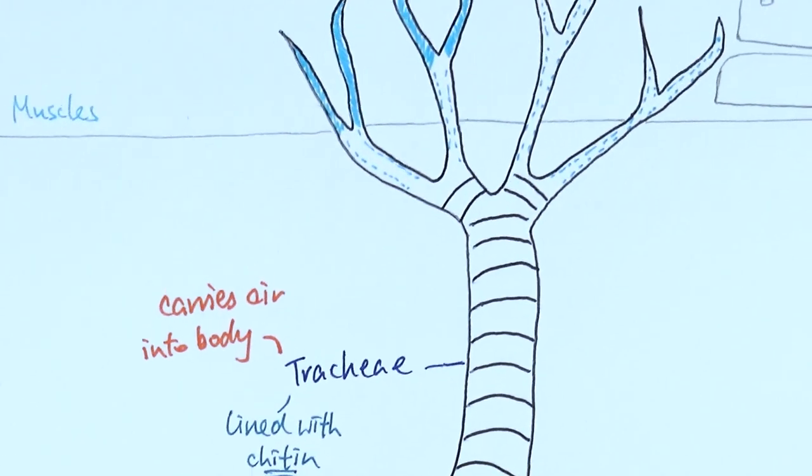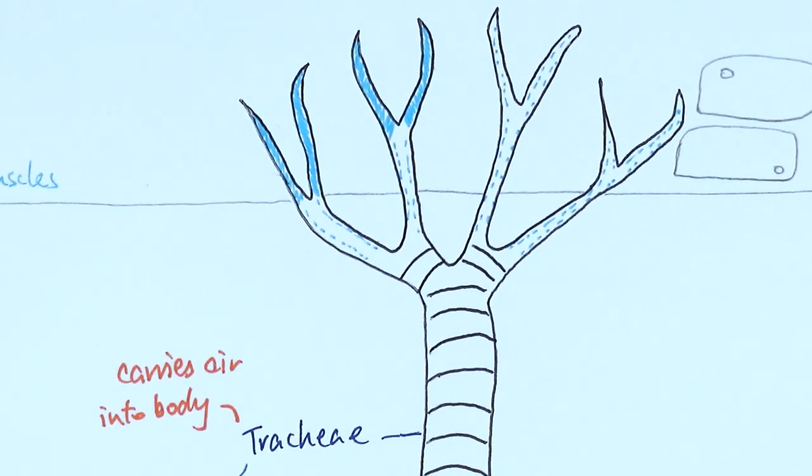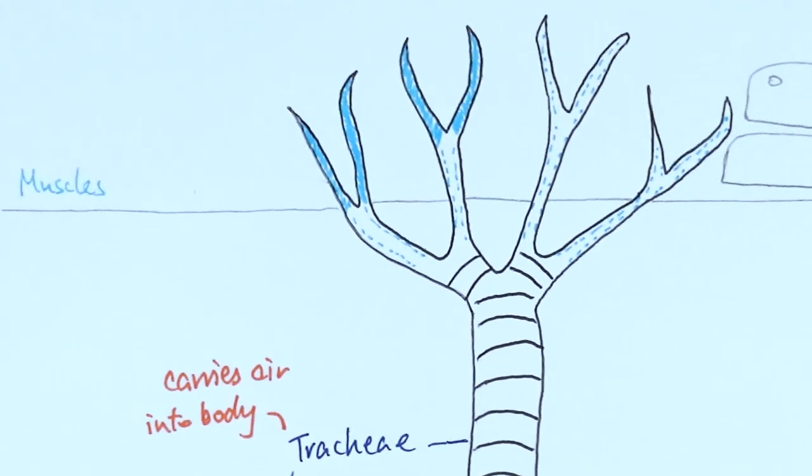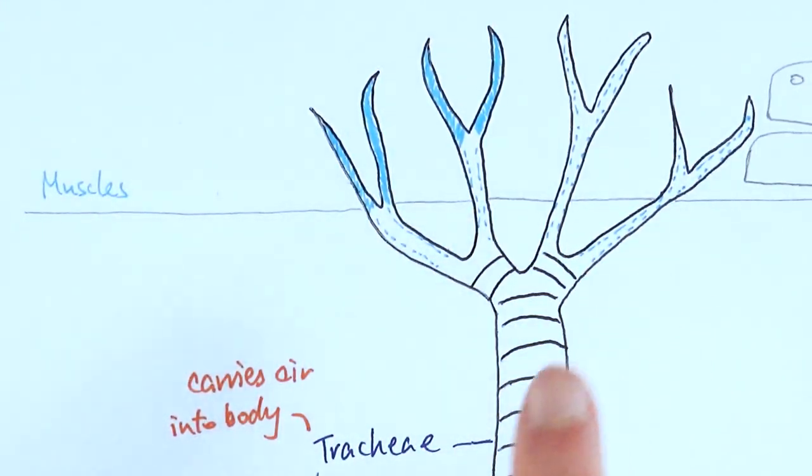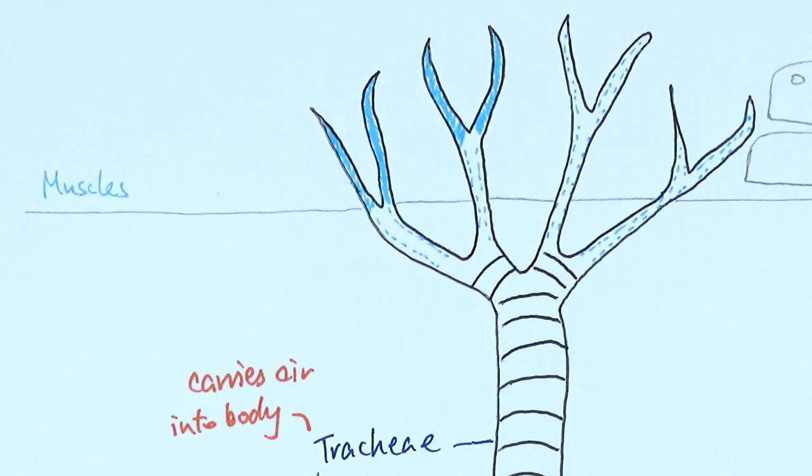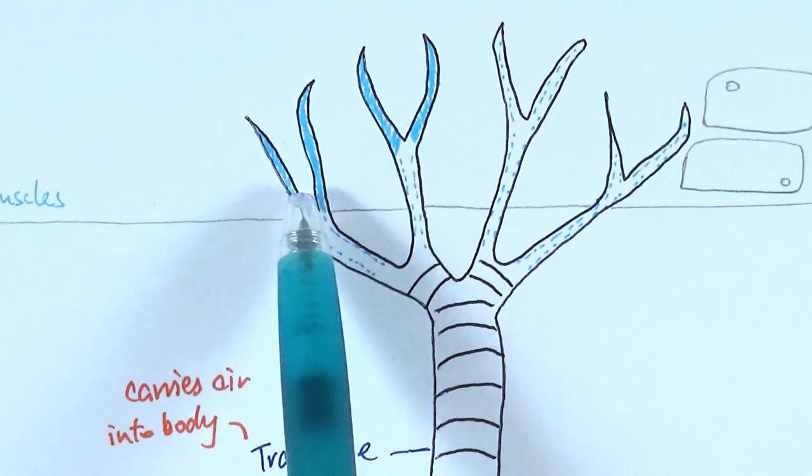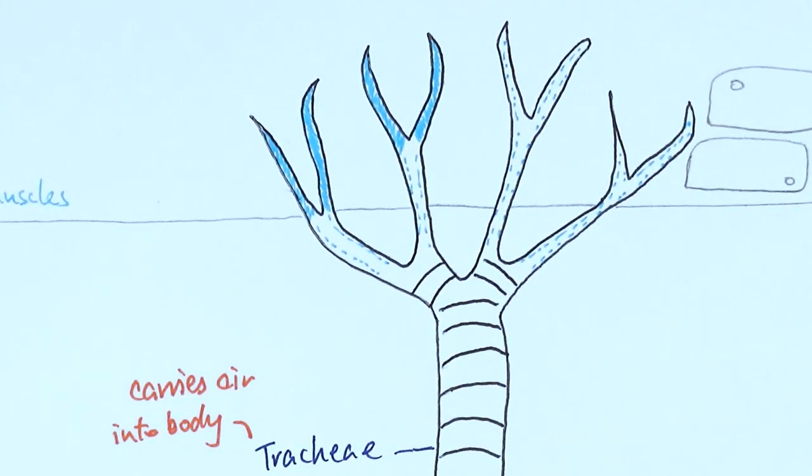And as it goes along, similar to our own system, it starts branching off into smaller bits to make sure they can do gas exchange. So actually at this point they diverge into the muscle part where the muscles, where the insects need to actually start flying or jumping, whatever it is. And here I've drawn it at two different stages.